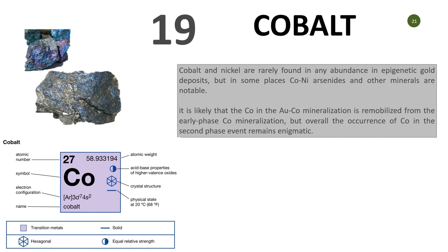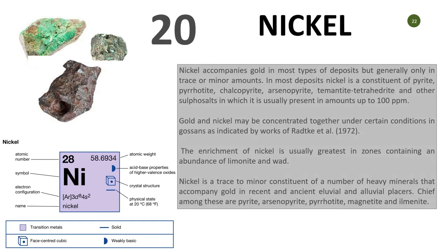Number twenty is nickel. Nickel and cobalt have a strong affinity. Nickel accompanies gold most of the time in deposits, occurring as minor traces in very small amounts. They concentrate together under certain conditions. The enrichment of nickel is really significant in zones containing an abundance of limonite. That is the last of the 20 elements we are discussing today. Thank you for listening.